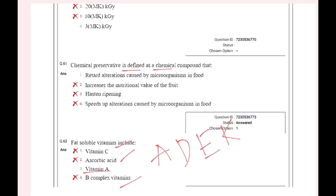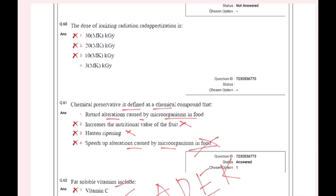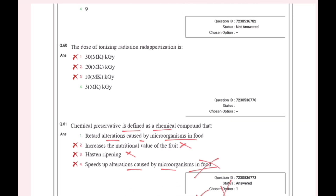Chemical preservative is defined as a chemical compound that retards alterations caused by microorganisms in food. Fortification increases the nutritional value of food. Ripening speeds up alterations caused by microorganisms in food.